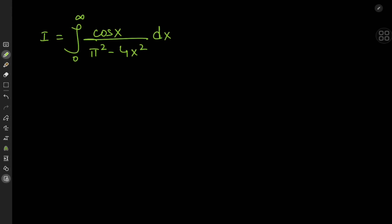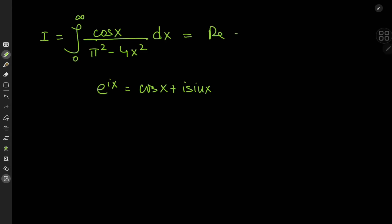So to celebrate we have this gorgeous looking integral: the integral from 0 to infinity of cosine(x) divided by (π² − 4x²) dx. We're going to solve it using some beautiful complex analysis. We have the perfect tool to start: Euler's beautiful formula, whereby e^(ix) = cos(x) + i·sin(x), meaning the target integral I is the real part of the integral from 0 to infinity of e^(ix) divided by (π² − 4x²) dx.